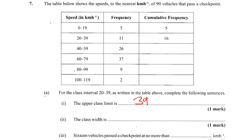So the boundaries are the extended ones - boundary would be 19.5 and 39.5. Those are the class boundaries: upper boundary, lower boundary. And the limits would be what we're seeing here, 39 and 20.